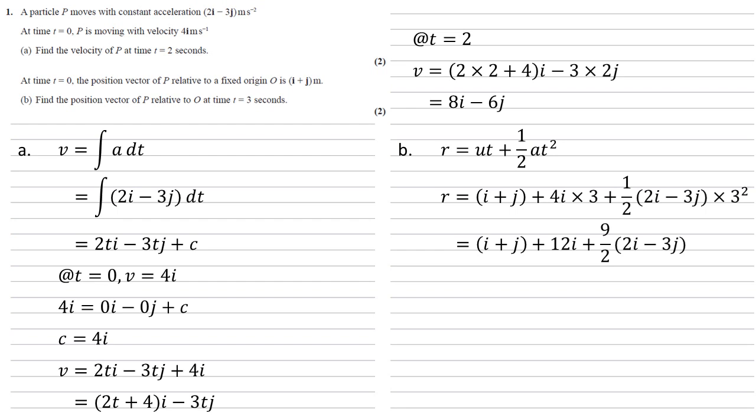This is going to give us i plus j plus 12i plus 9 over 2 times 2i minus 3j. We're just going to simplify to 22i minus 25 over 2j.